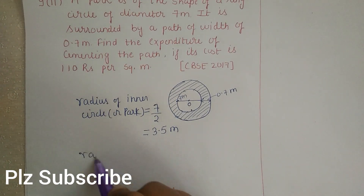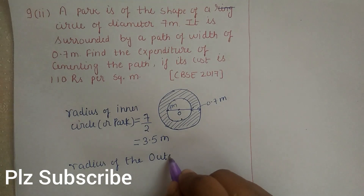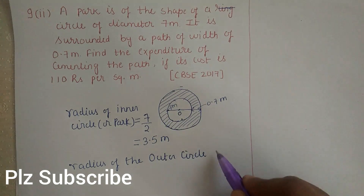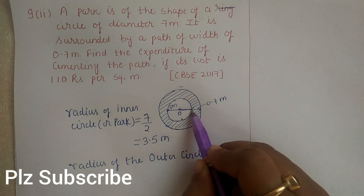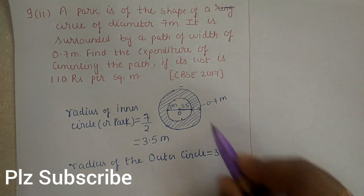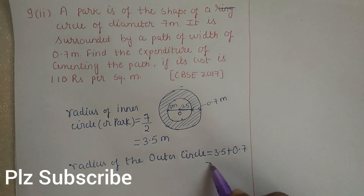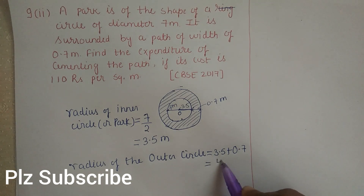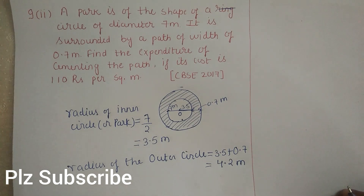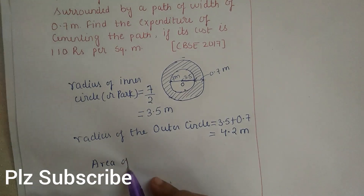Now, the radius of the outer circle — the outer circle is the one on the outside. The inner circle's radius is 3.5 meters. To get the outer circle's radius, we add the width of the path: 3.5 meters plus 0.7 meters gives us 4.2 meters. So 4.2 meters is the radius of the outer circle. Now we have to find the area of the path.